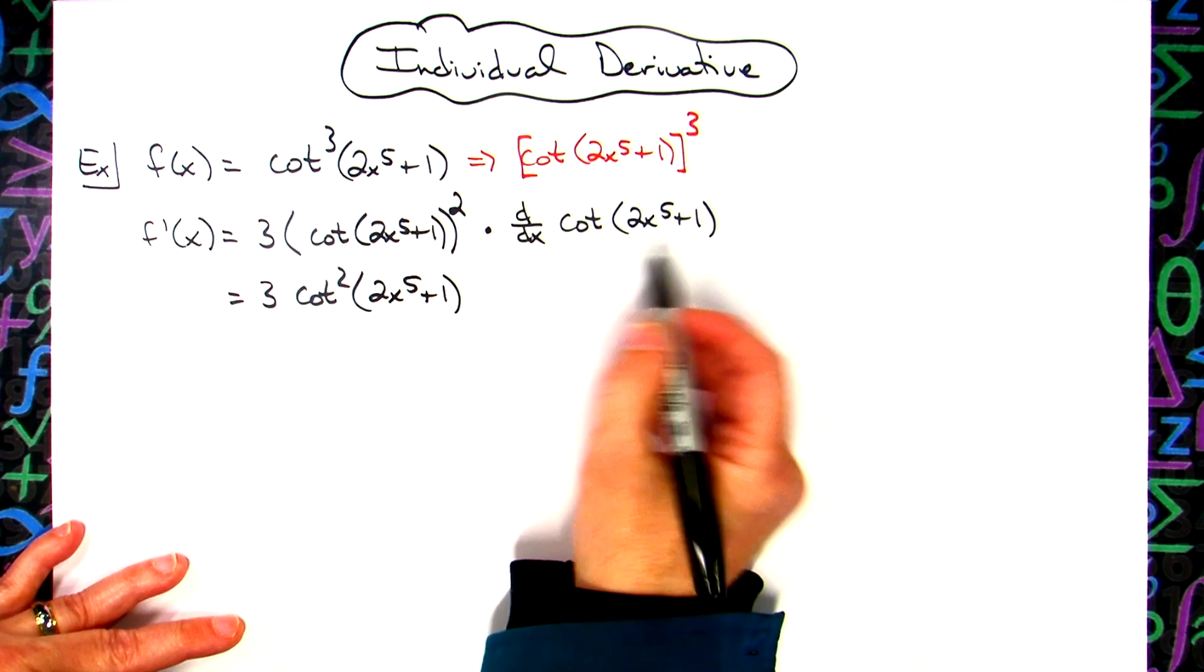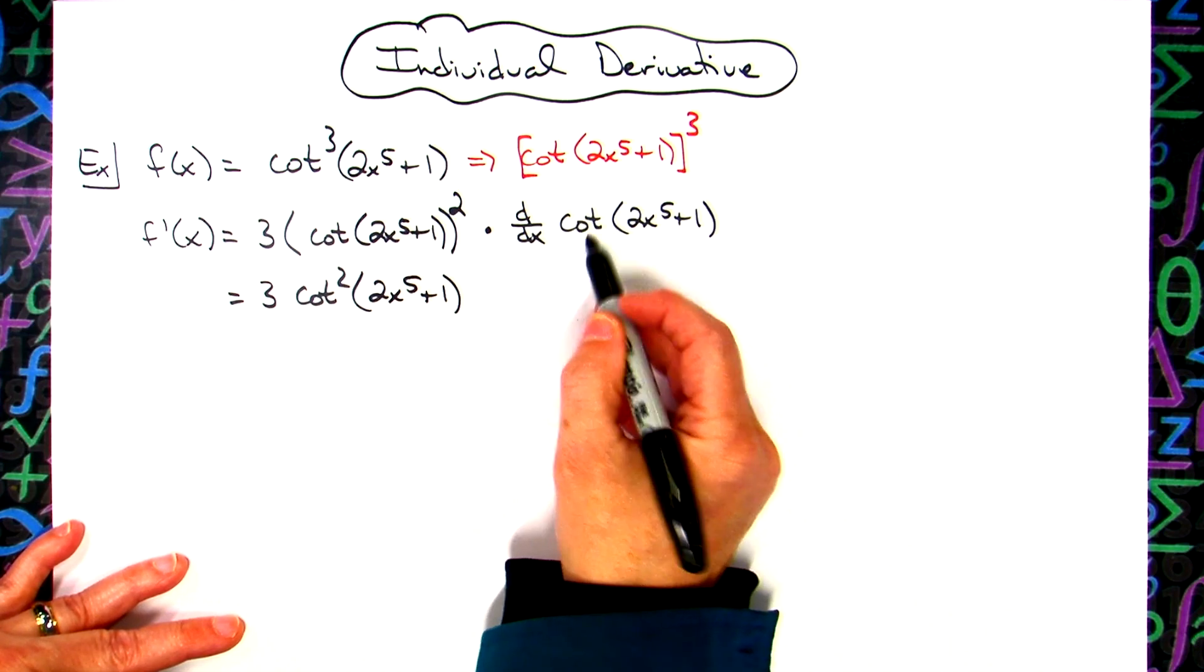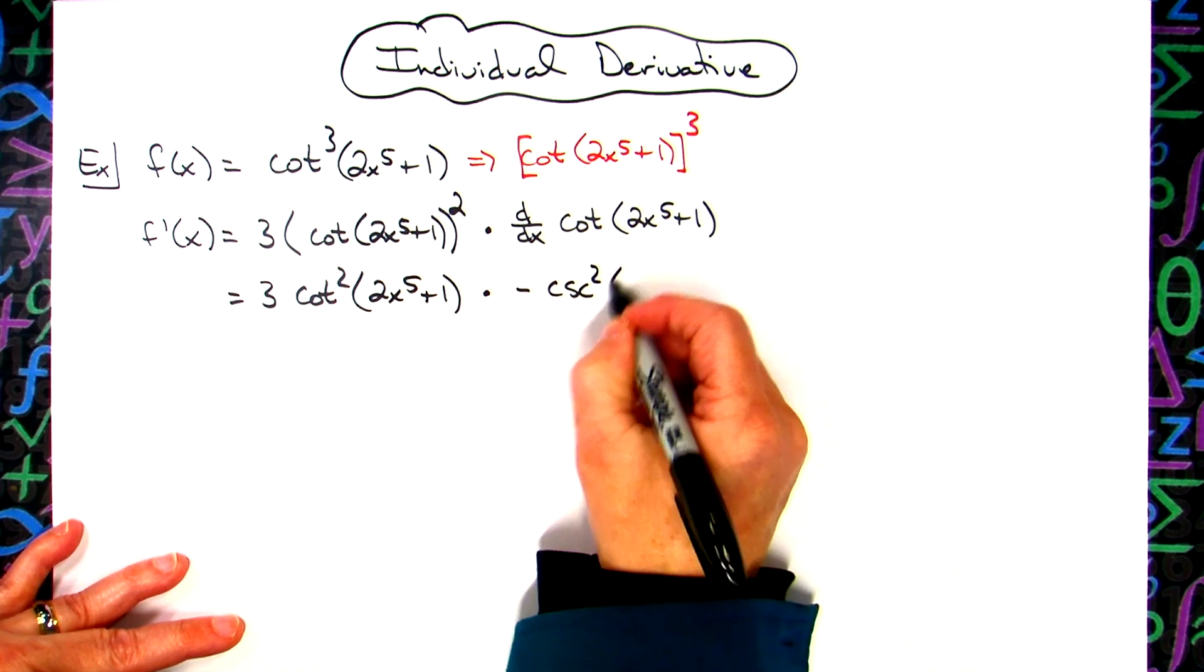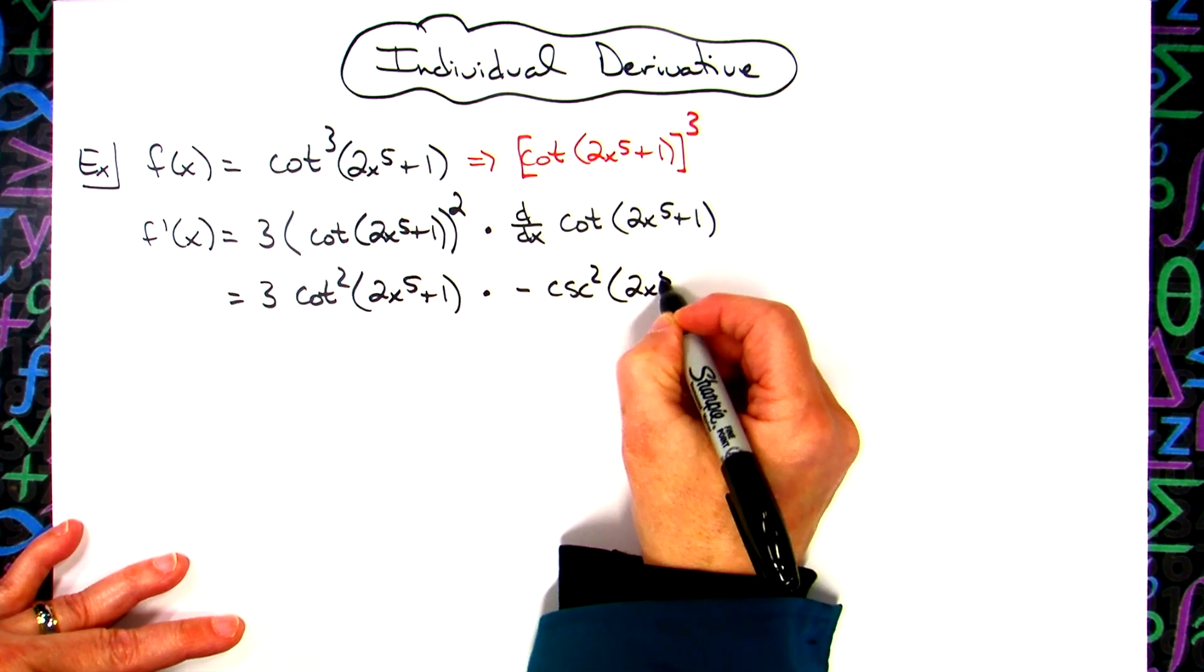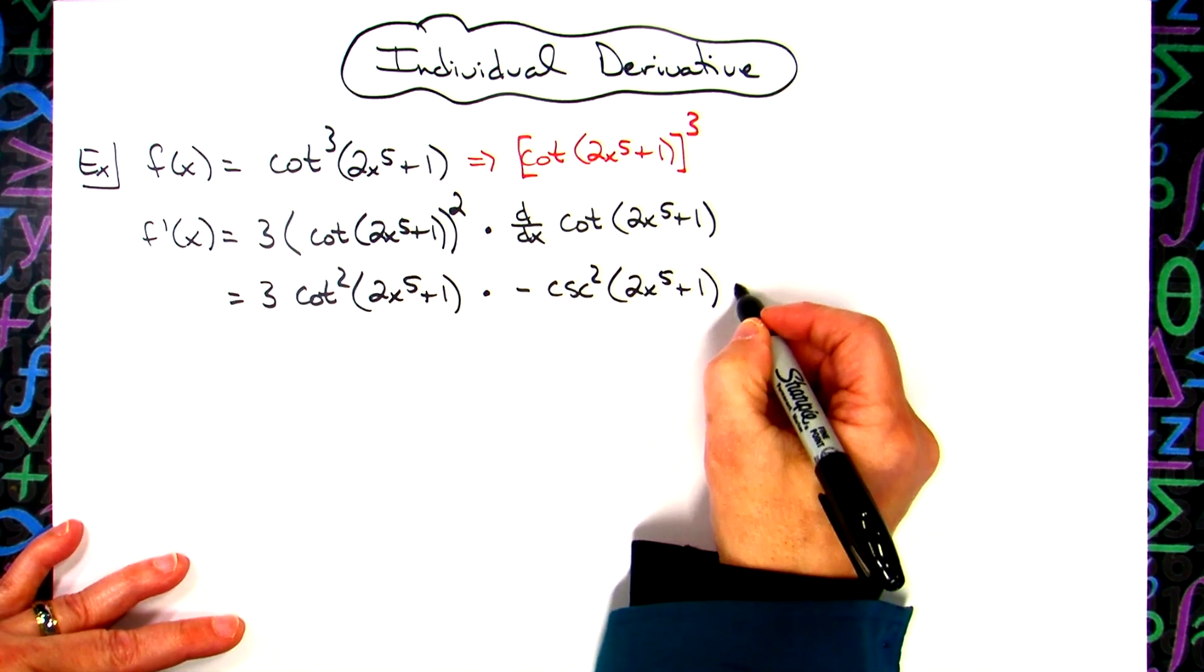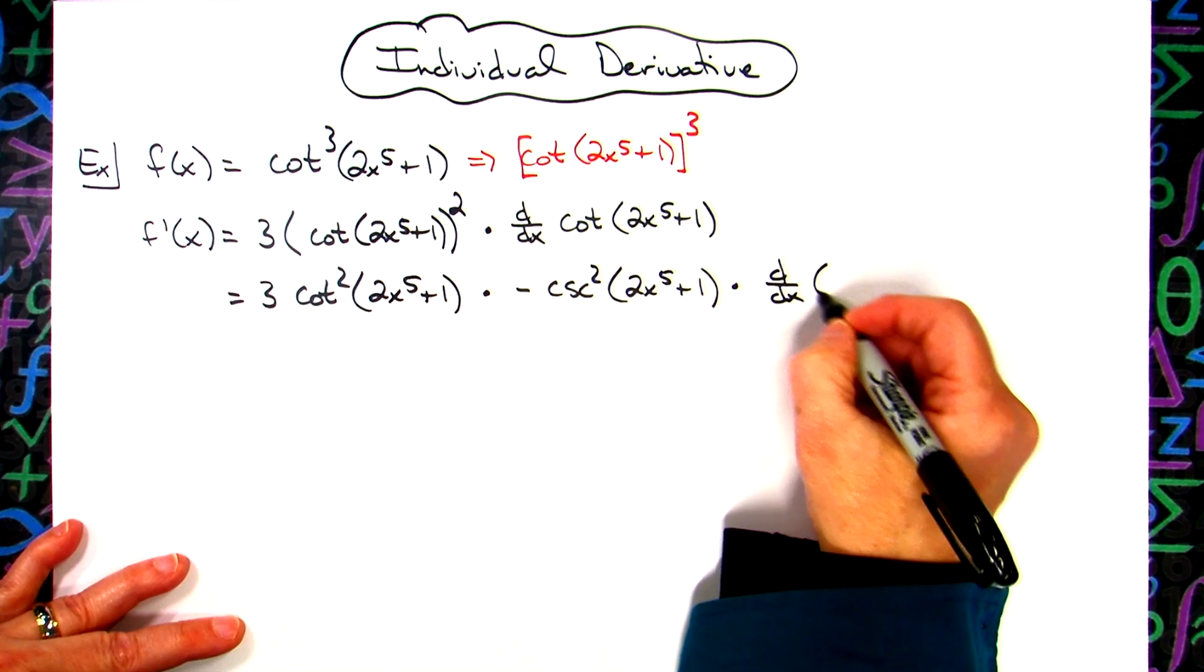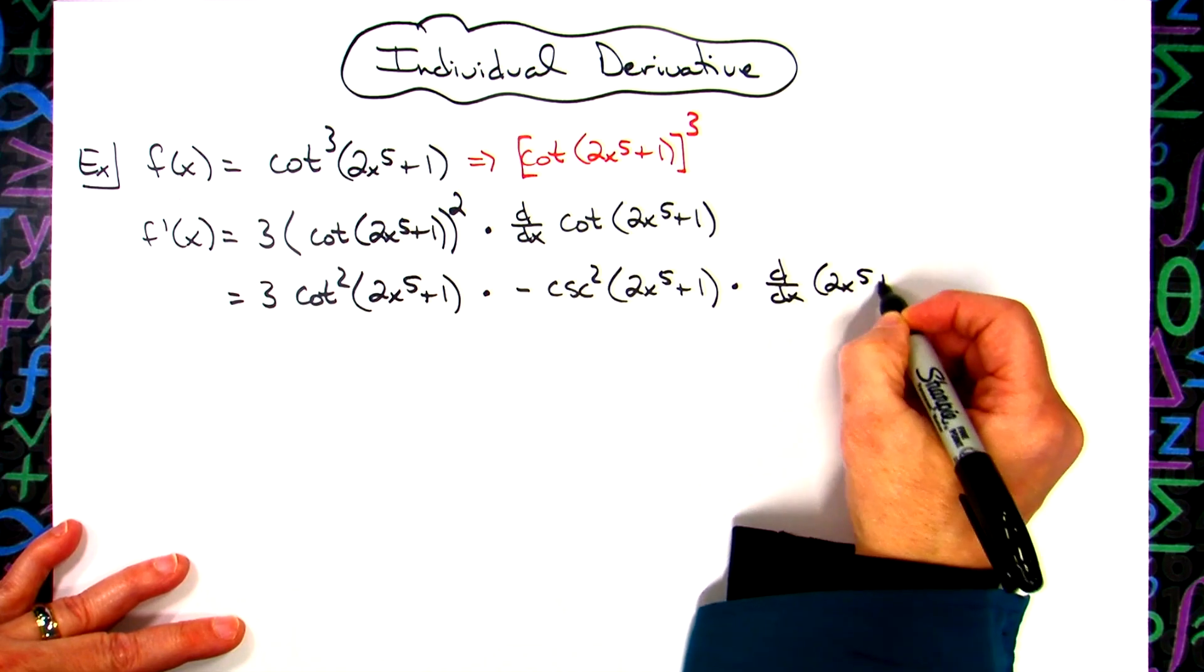Now we're going to take the derivative of the outside function, so derivative of cotangent is going to be a negative cosecant squared. Leave the inside function alone, and then multiply that by the chain, the derivative of that inside function, which is the 2x to the fifth plus one.